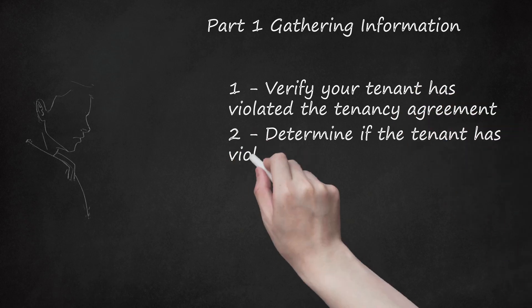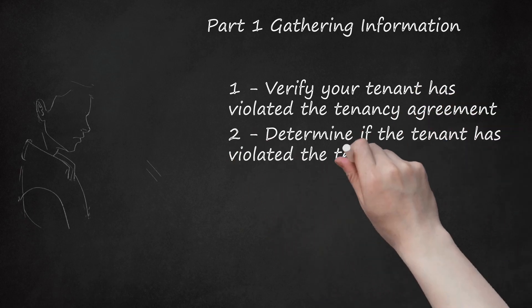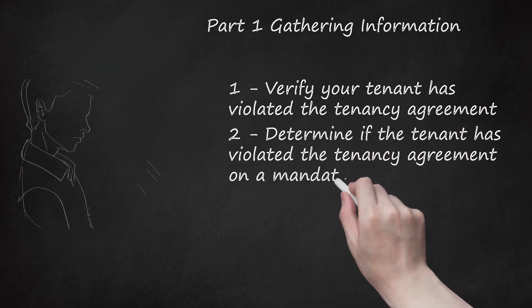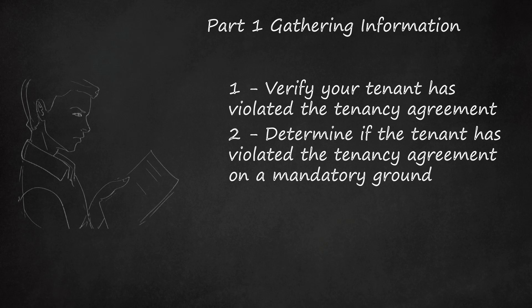Determine if the tenant has violated the tenancy agreement on a mandatory ground. There are 17 possible grounds for considering eviction using a Section 8 notice. The first eight of these grounds are mandatory, meaning that if you can prove the violation, the court must grant the possession order. If your tenant has violated the tenancy agreement on multiple grounds, you should include all of them.